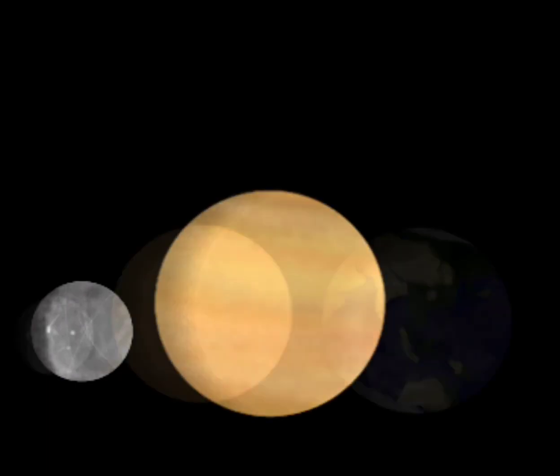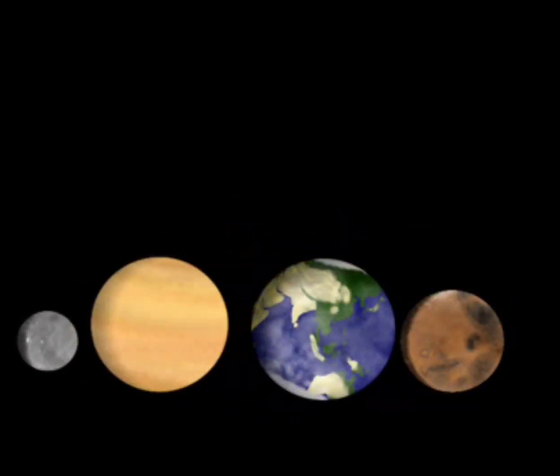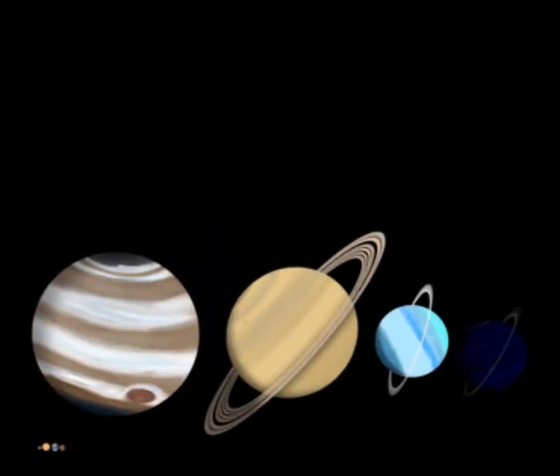Mercury, Venus, Earth, and Mars—they're the first four planets, rocky like ours. Jupiter, Saturn, Uranus, and Neptune—they're made of hydrogen and helium gas like a balloon.